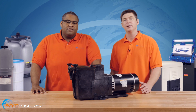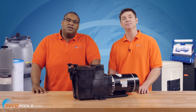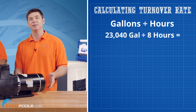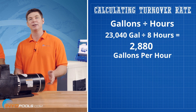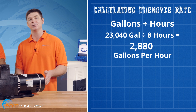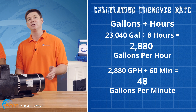The goal of any residential pool is to turn over your body of water once a day. The general rule is 8 to 10 hours — that's the pump run window you want. In this example we'll use 8 hours. Take the gallons and divide by hours to get gallons per hour: 23,040 divided by 8 equals 2,880 gallons per hour. Then divide by 60 to get gallons per minute: 2,880 divided by 60 equals 48 gallons per minute.